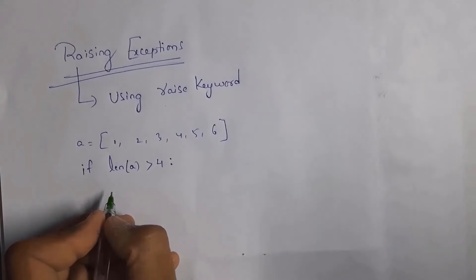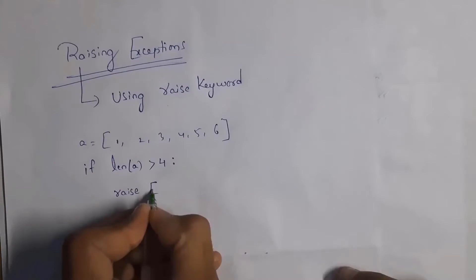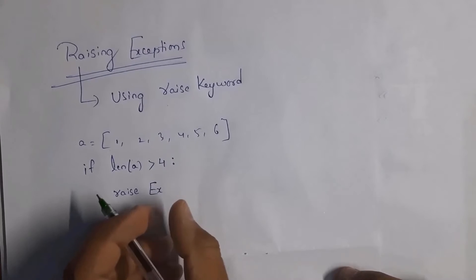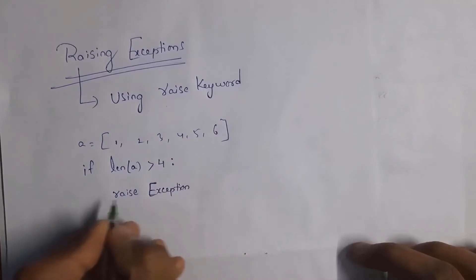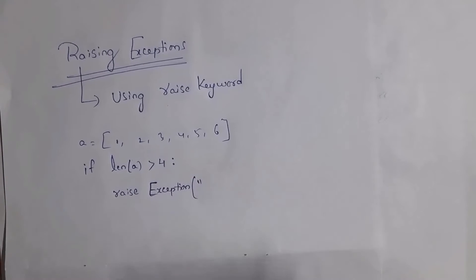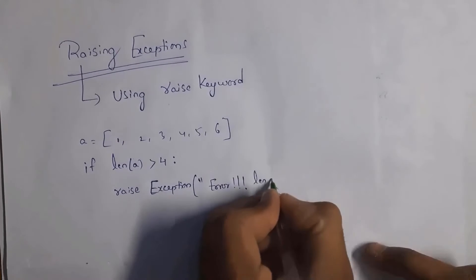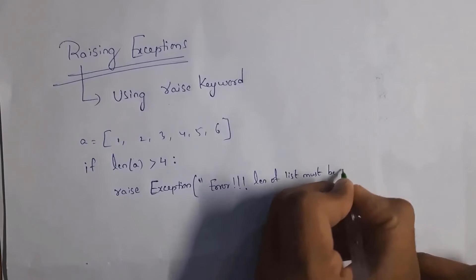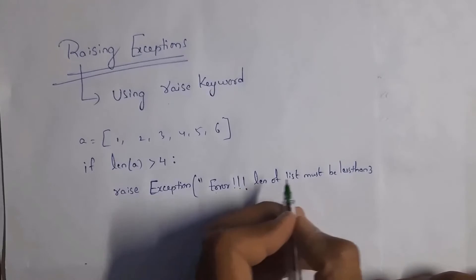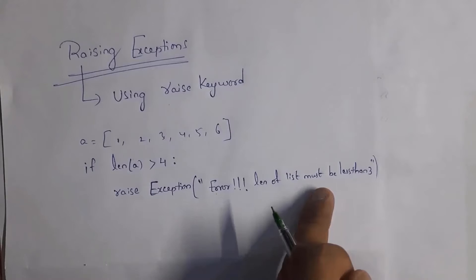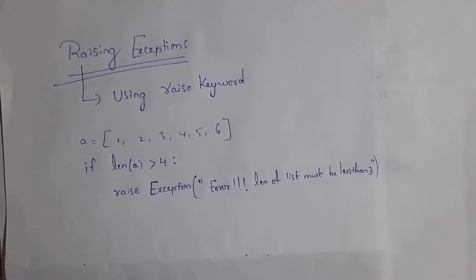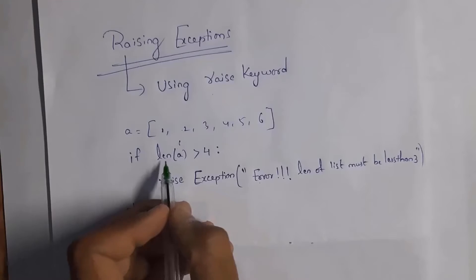By using the raise keyword we can create our own exception. Write: raise Exception('error: length of list must be less than three'). Note that Exception must have a capital E, otherwise it will display an error. This is the exception message I created.